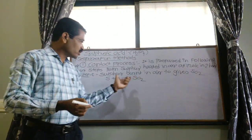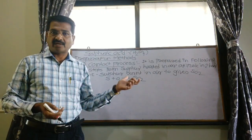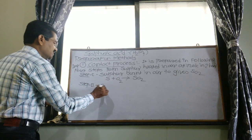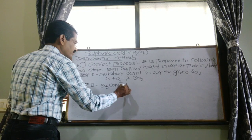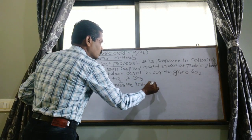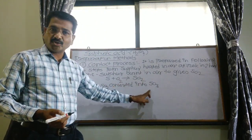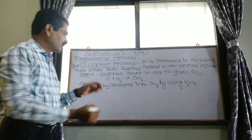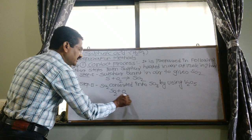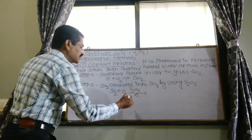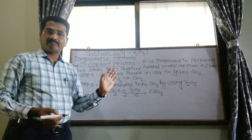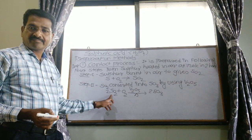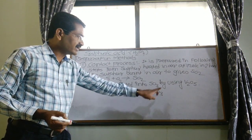In step two, that sulfur dioxide is converted into sulfur trioxide. Sulfur dioxide is burnt again in the presence of vanadium pentoxide, V2O5. Two moles of sulfur dioxide are burnt in air in the presence of V2O5 to produce sulfur trioxide, SO3.